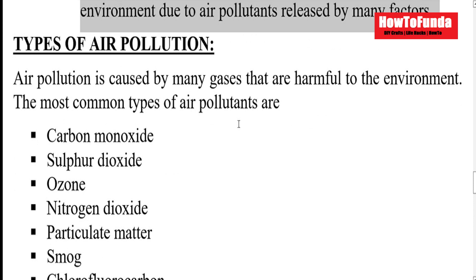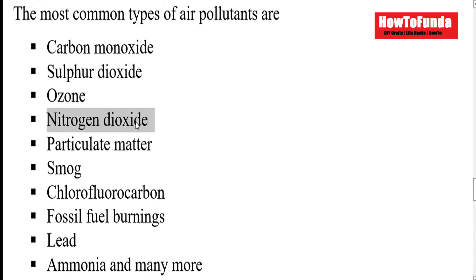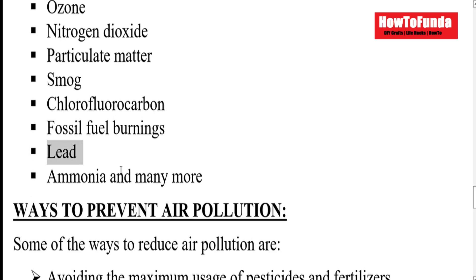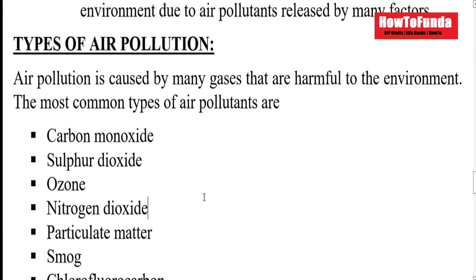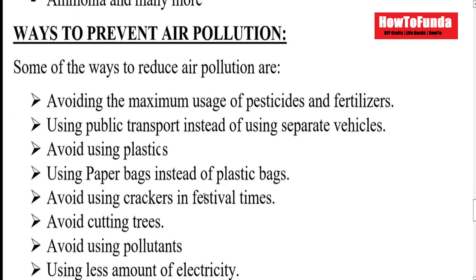What are the different types of air pollution? Air pollution can be caused by various pollutants on the earth. It could be carbon monoxide, sulfur dioxide, ozone, nitrogen dioxide, particulate matter, smog, chlorofluorocarbon, burning of fossil fuels, lead, ammonia, and many more. These are some of the different air pollutants which can cause air pollution.